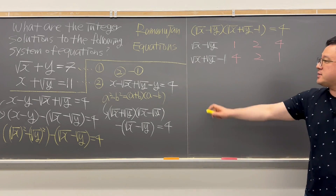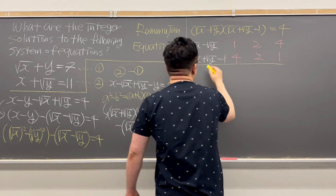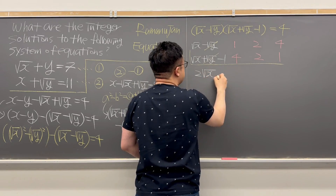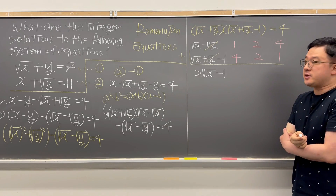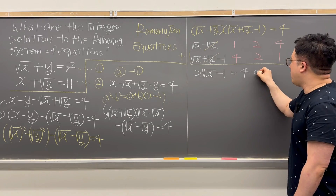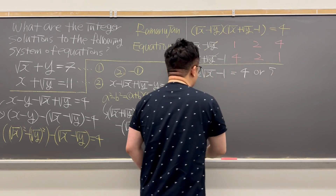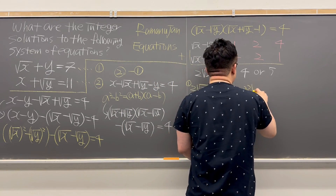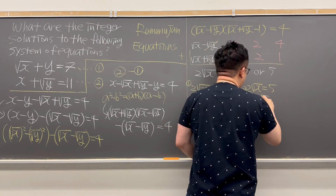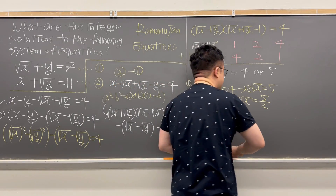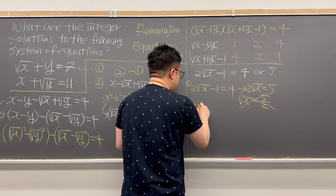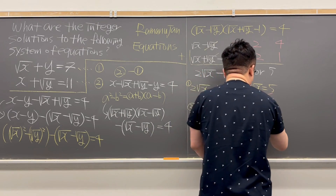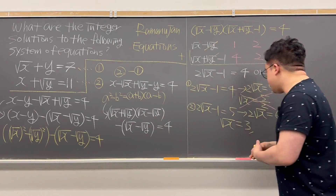Adding the two factor expressions together, the ±√y terms cancel, leaving 2√x − 1. Adding the corresponding integer pairs gives us either 5 or 4. If 2√x − 1 = 4, then √x = 5/2, meaning x is not an integer — so this case is discarded. If 2√x − 1 = 5, then 2√x = 6, so √x = 3, meaning x = 9.